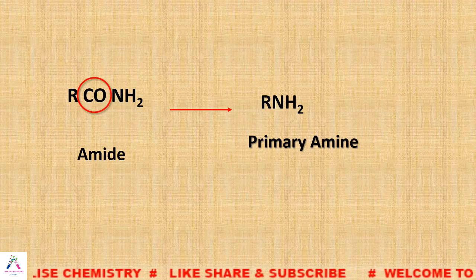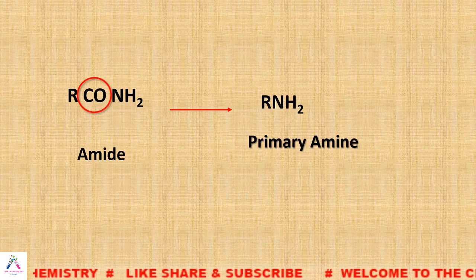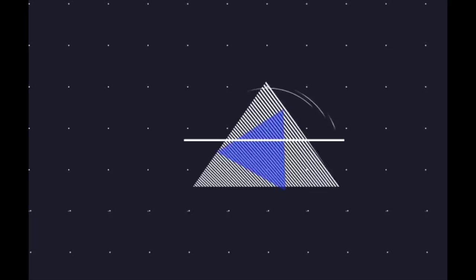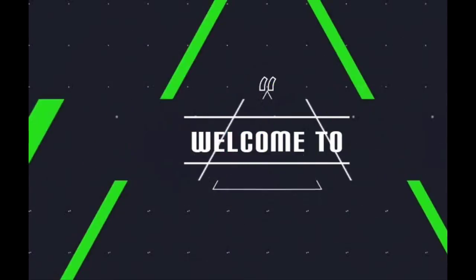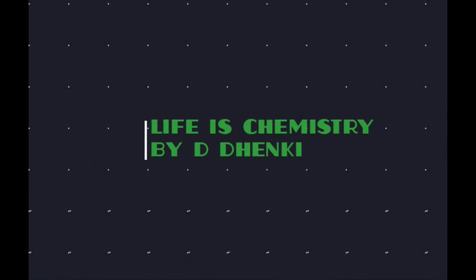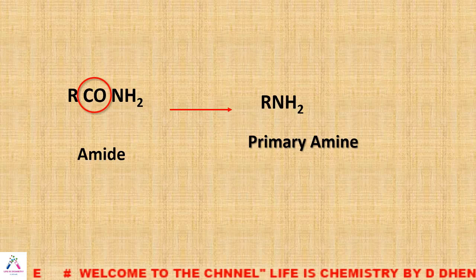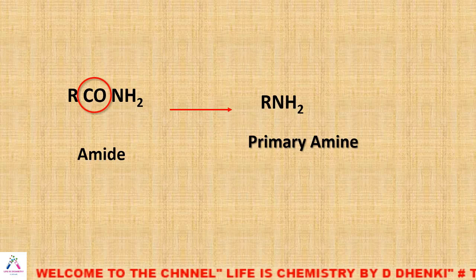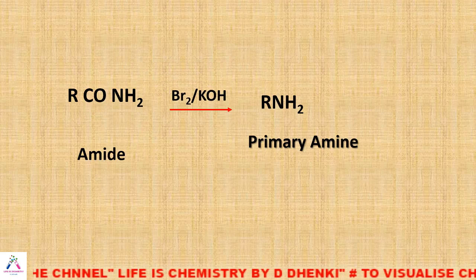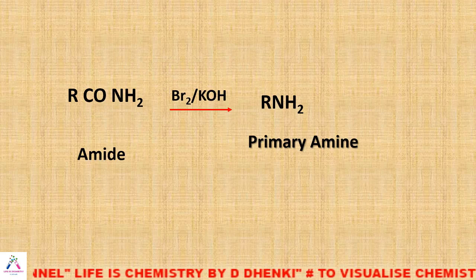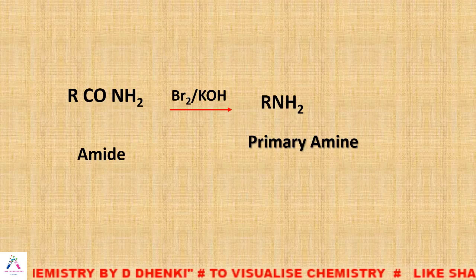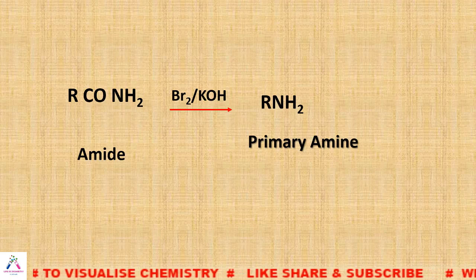An important feature of the reaction is that the number of carbons decreases when we convert acid amide to primary amine. These types of reactions are known as degradation reactions. The reagent used is bromine in basic medium — that is, bromine in KOH or bromine in NaOH.